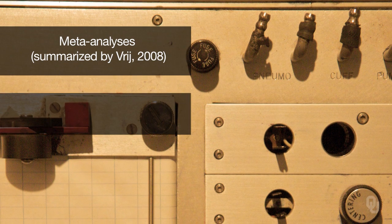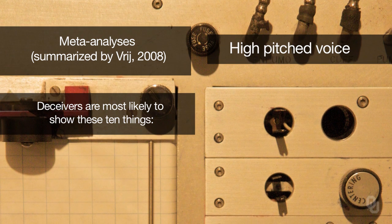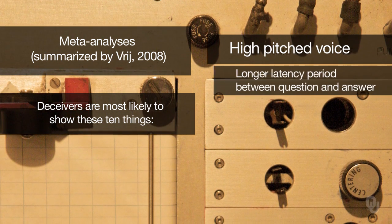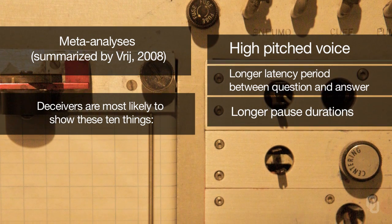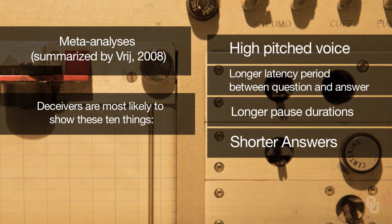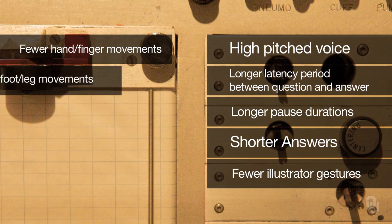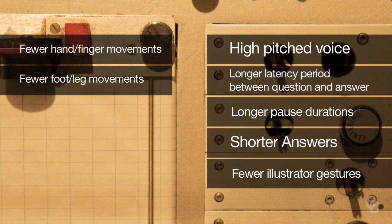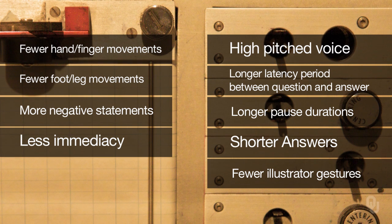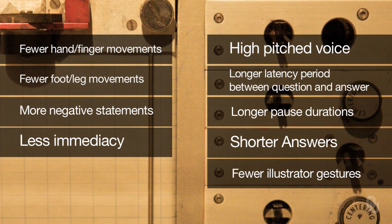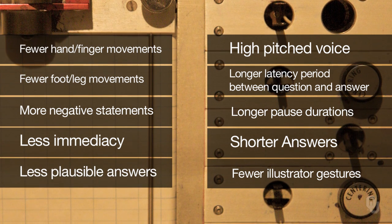Several meta-analyses summarized by Vry in 2008 show that deceivers are more likely to show these 10 things: 1. High-pitched voice. 2. A longer latency period between a question and an answer. 3. Longer pause durations. 4. Shorter answers overall. 5. Fewer illustrator gestures. 6. Fewer hand and finger movements. 7. Fewer foot and leg movements. 8. More negative statements. 9. Less immediacy, which is a combination of gaze, proximity, body lean, body and face orientation, and even the verbal language of psychological distance. And 10. They use less plausible answers.